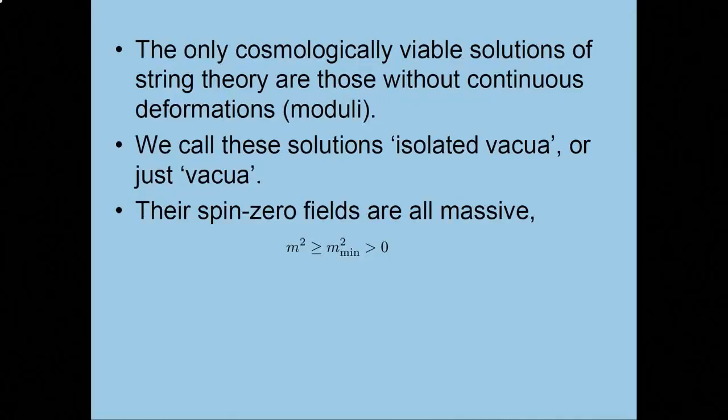So, we're very familiar with a massless spin two field, the graviton that mediates gravity. We know about a massless spin one field, the photon that mediates electromagnetism. These are both long-range forces. But we've not seen any evidence for long-range forces mediated by massless spin zero fields. So, the theory better not predict massless spin zero fields.